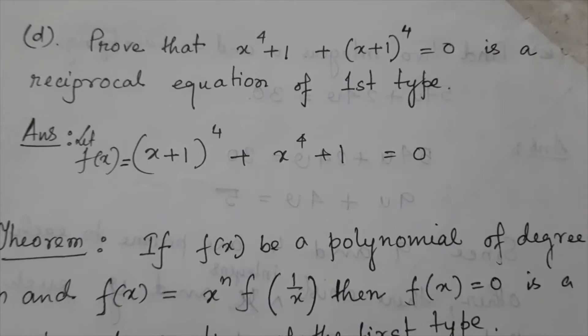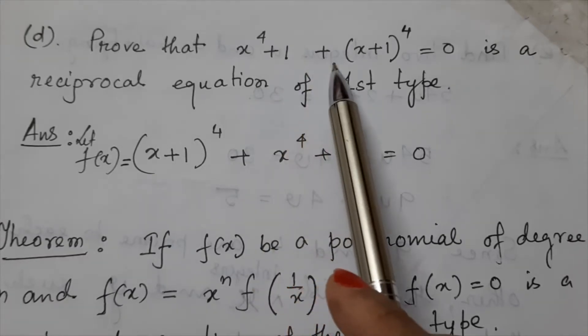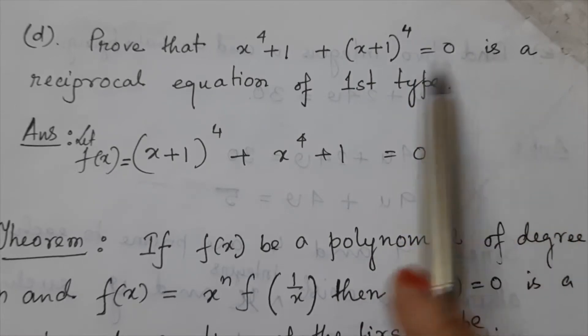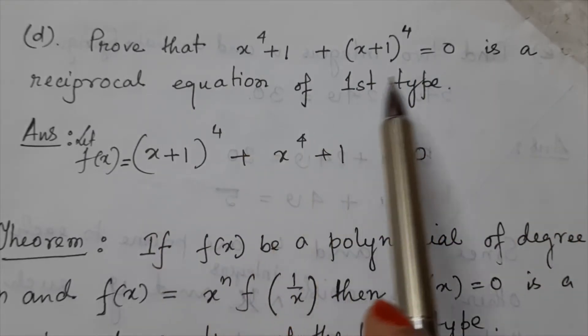Hello everyone, here is a question for reciprocal equation. Prove that x to the power 4 plus 1 plus x plus 1 to the power 4 equals 0 is a reciprocal equation of first type.